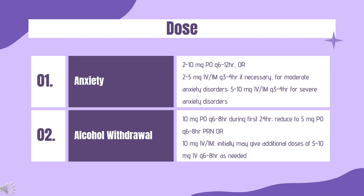Dose — Anxiety: Indicated for management of anxiety disorders or for short-term relief of the symptoms of anxiety. 2 to 10 mg PO Q6–12HR, or 2 to 5 mg IV/IM Q3–4HR if necessary.